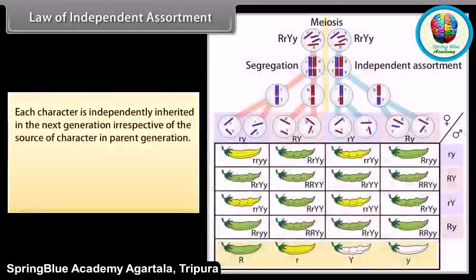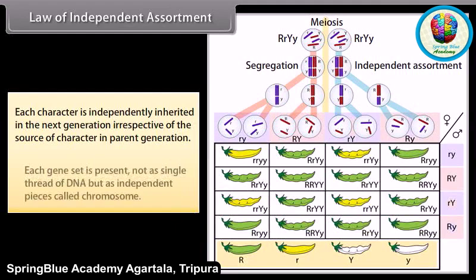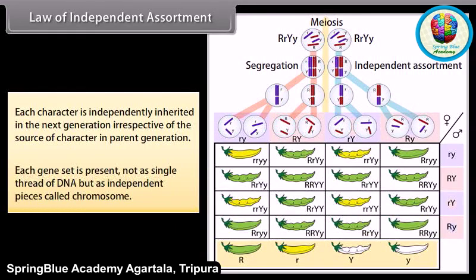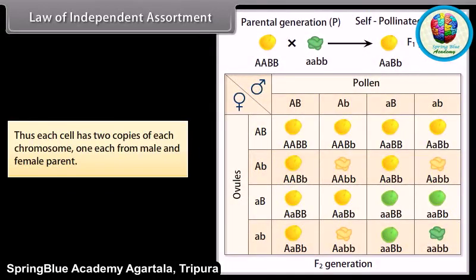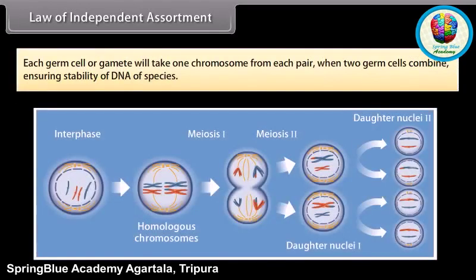Law of independent assortment. Each character is independently inherited in the next generation, irrespective of the source of the character in the parent generation. Each gene set is present not as a single thread of DNA, but as independent pieces called chromosomes. Thus, each cell has two copies of each chromosome — one each from the male and female parent. Each germ cell or gamete will take one chromosome from each pair when two germ cells combine, ensuring stability of DNA of the species.